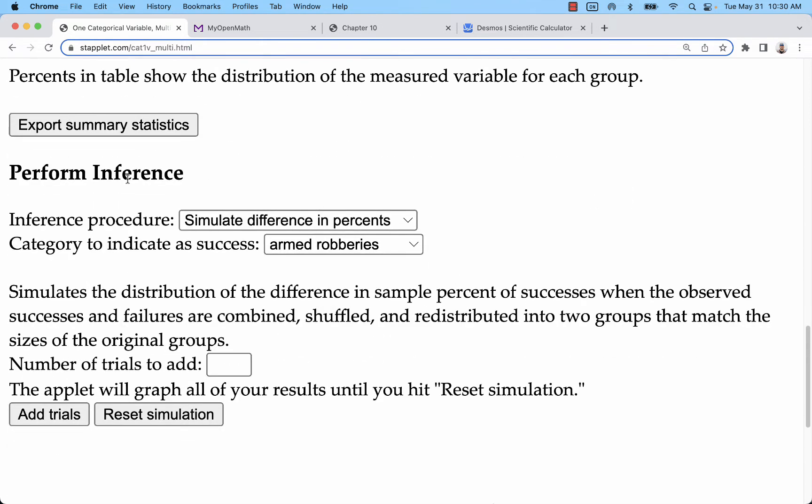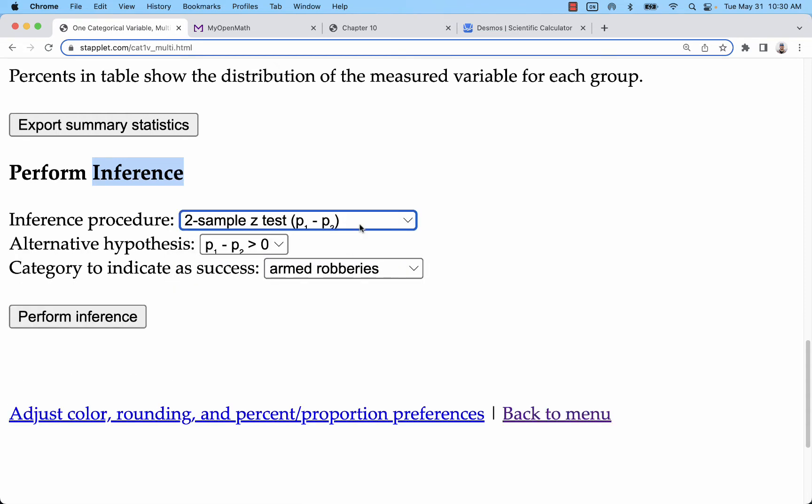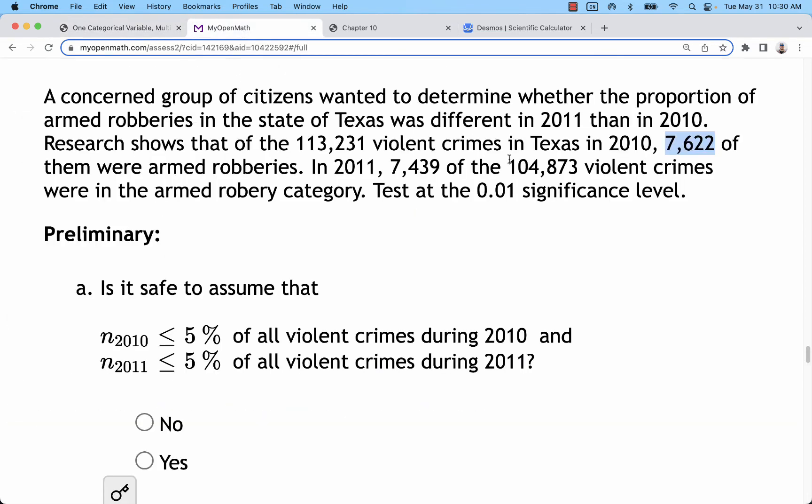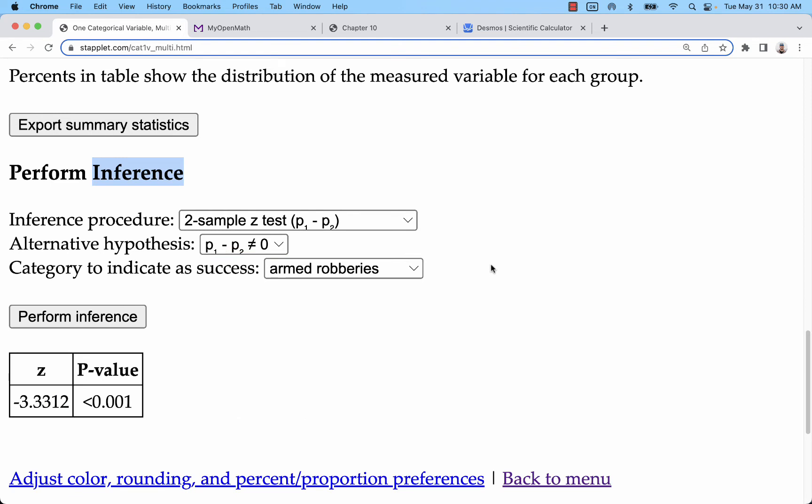We're going to go down to perform inference and do a two-sample Z test for the difference between those population proportions. We're going to figure out if it's a left, right, or two-tailed test. This one just says different, so we have a two-tailed test. We're going to use armed robberies as our success.